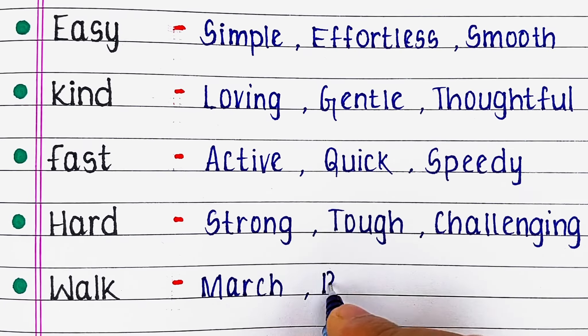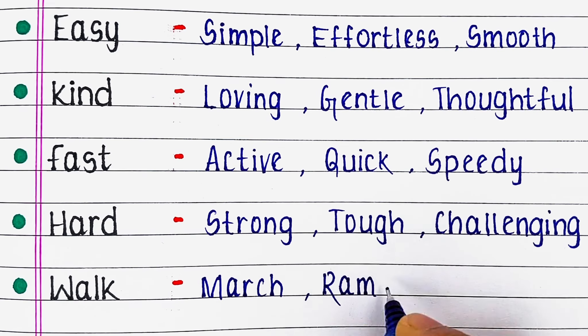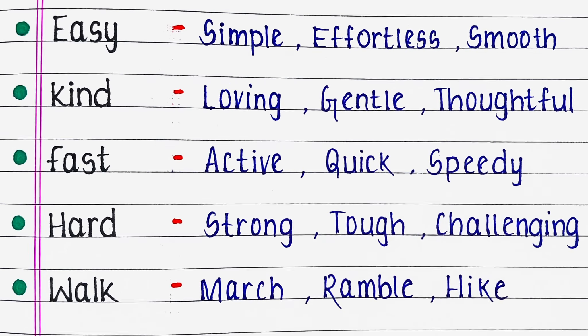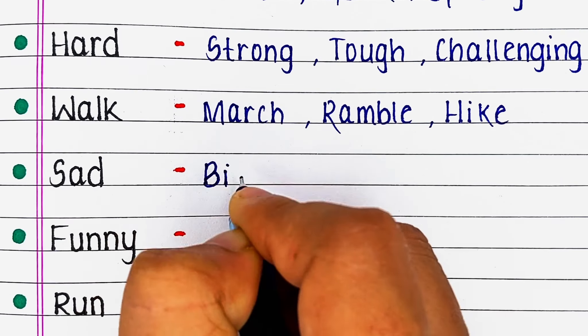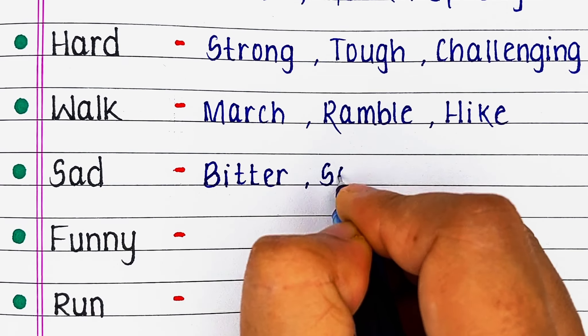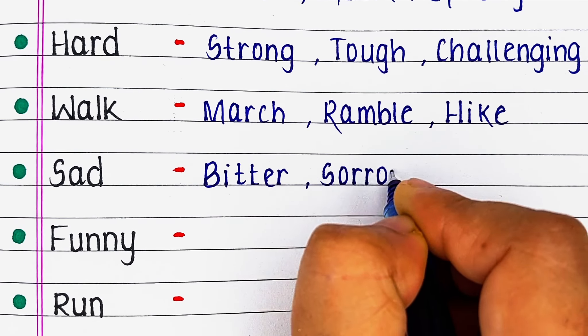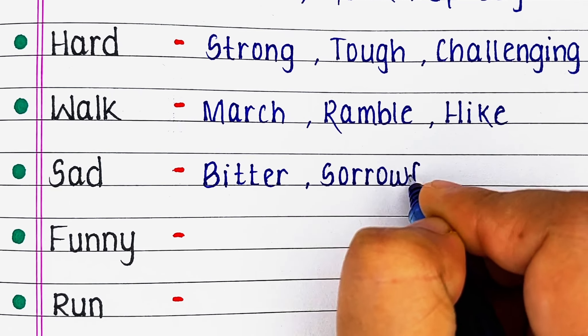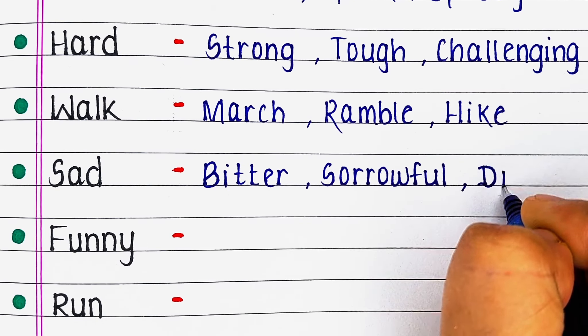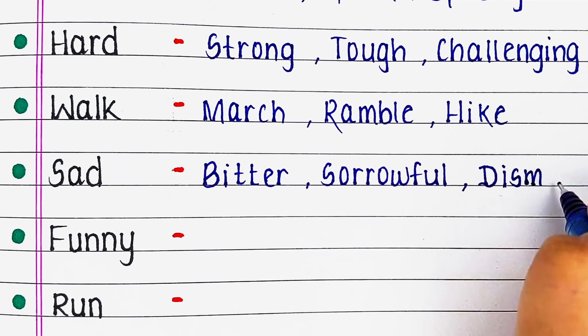Next word is Walk. Its similar meaning words are March, Ramble and Hike. Next word is Sad. Its similar meaning words are Bitter, Sorrowful and Dismal.